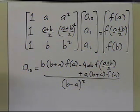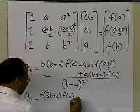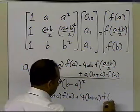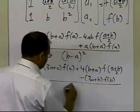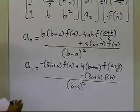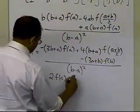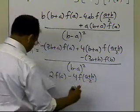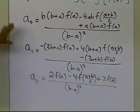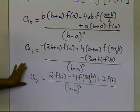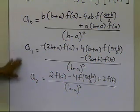The solutions for a₀ and a₁ are lengthy expressions with coefficients on each function value. For a₂, the expression is: [2f(a) − 4f((a+b)/2) + 2f(b)] / (b−a)². All unknowns a₀, a₁, a₂ involve only the lower and upper limits of integration and the function values at those three points, so everything on the right-hand side is known.